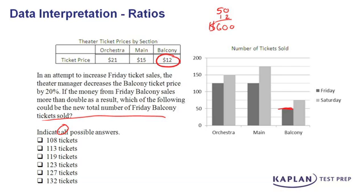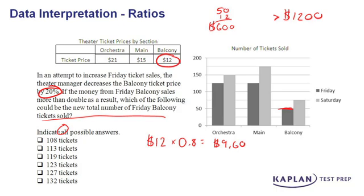To more than double, it means we're going to get more than $1,200 in sales with the new decreased price. If the price was originally $12 and they're decreasing it by 20%, we take $12 and multiply it by 0.8, and we get $9.60 per ticket after the decrease.